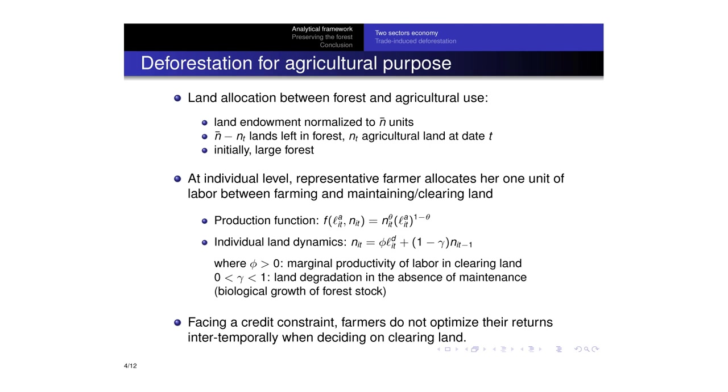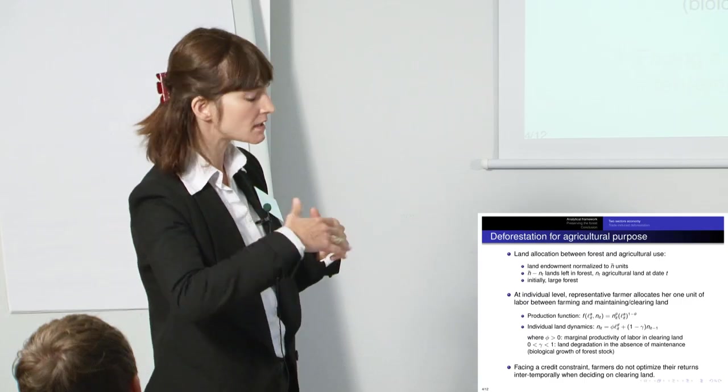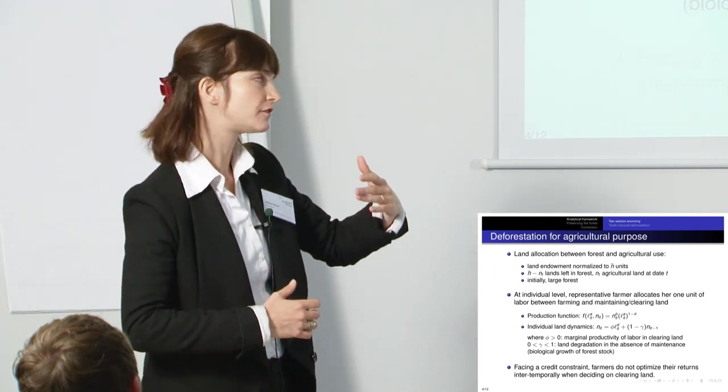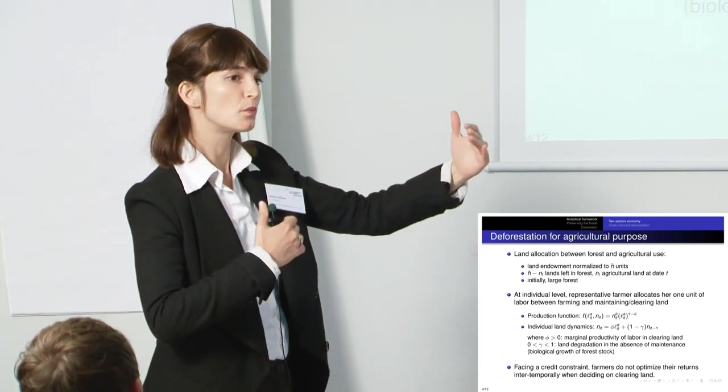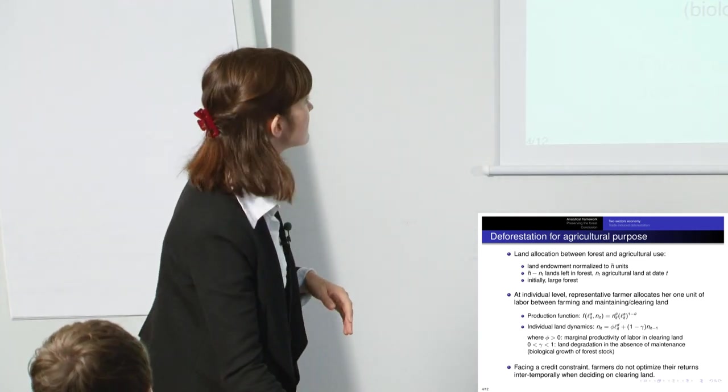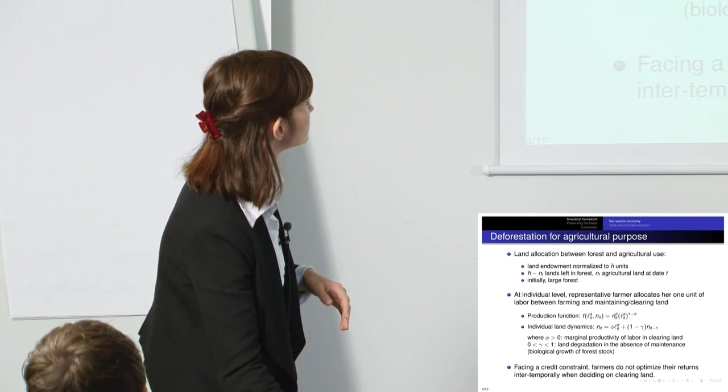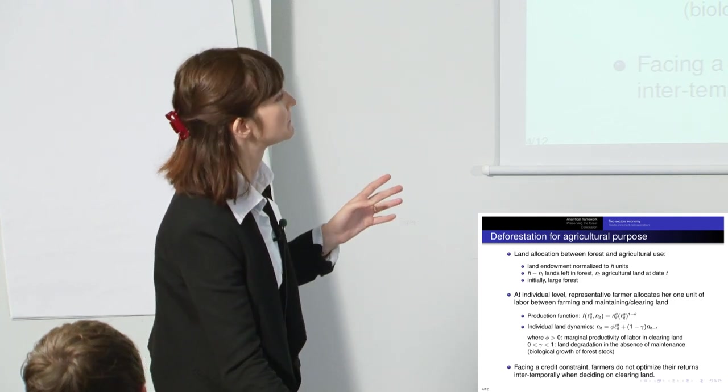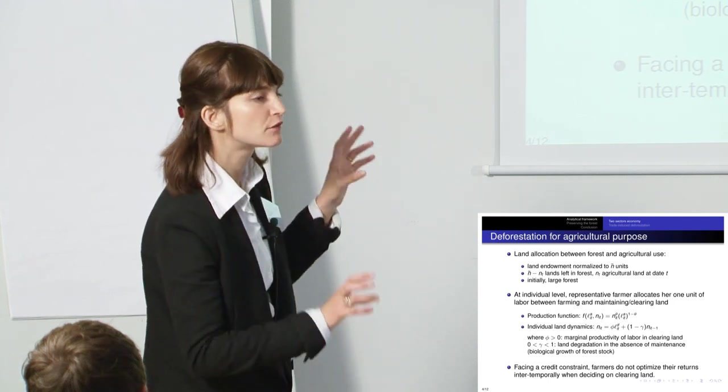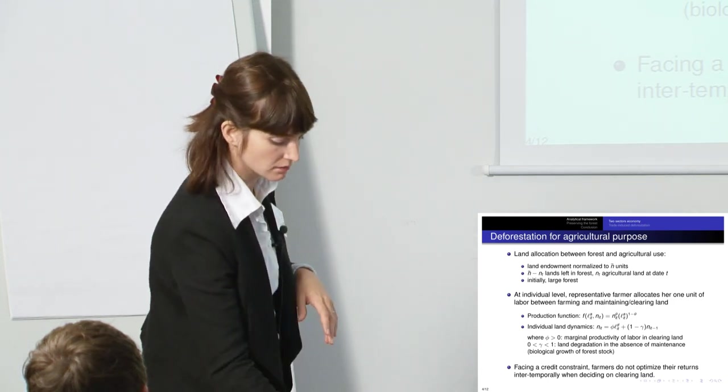You can also use your labour to increase the amount of land that you are using. And this is the land dynamics at the individual level. So each farmer can increase its amount of land to a point where it is too big for him just to maintain this land. And we assume that they do not optimise their return inter-temporally for the decision of allocation of labour.